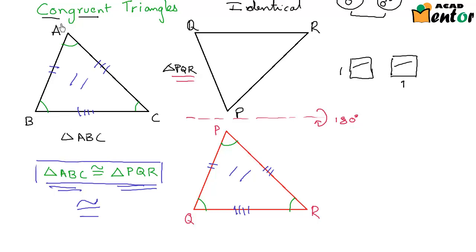That means if A is the vertex which corresponds to vertex P in the other triangle, then the position of A and position of P would have to be the same.